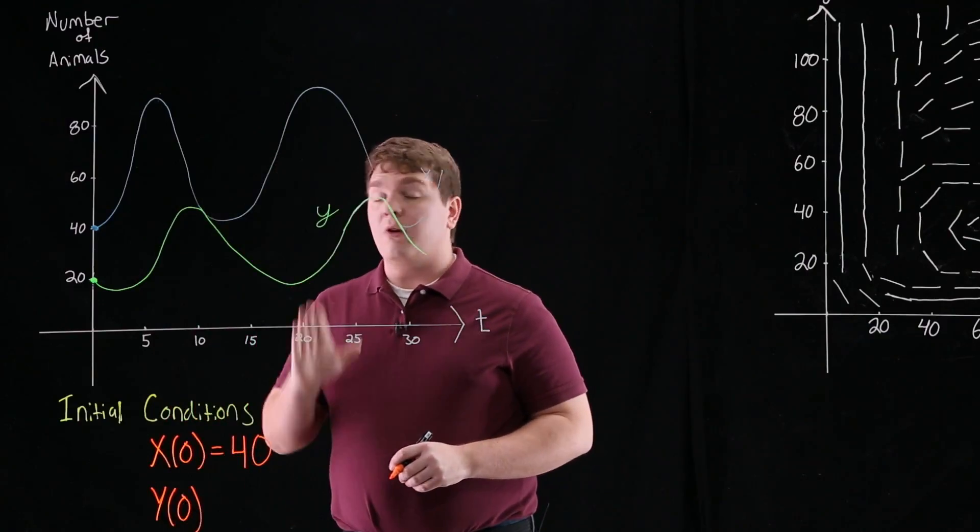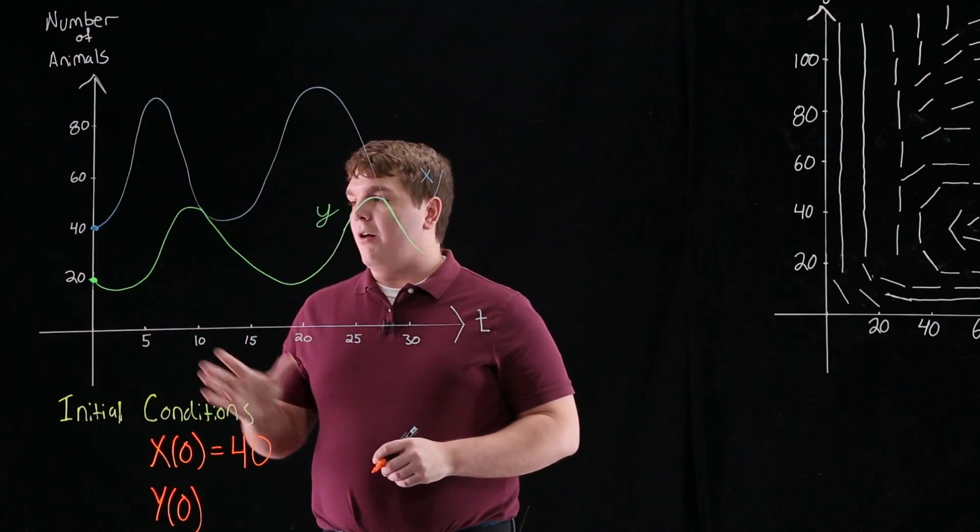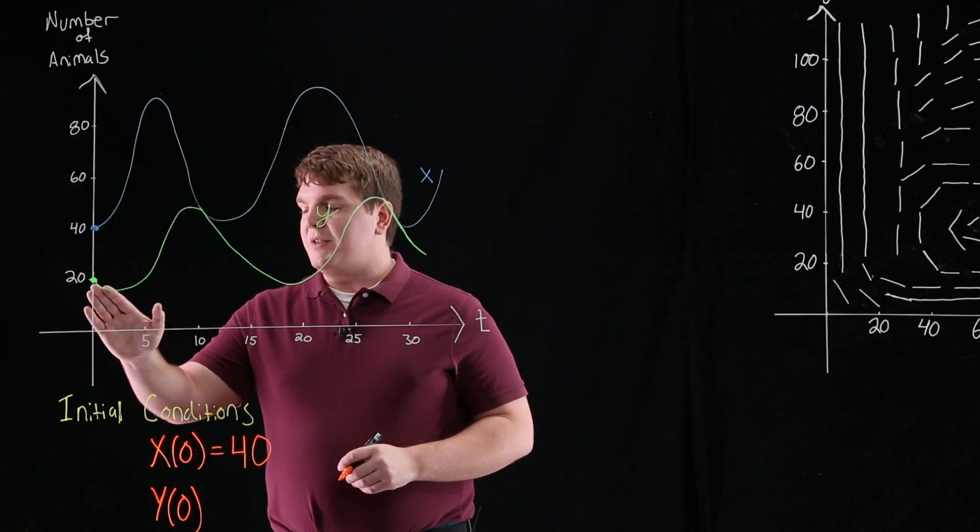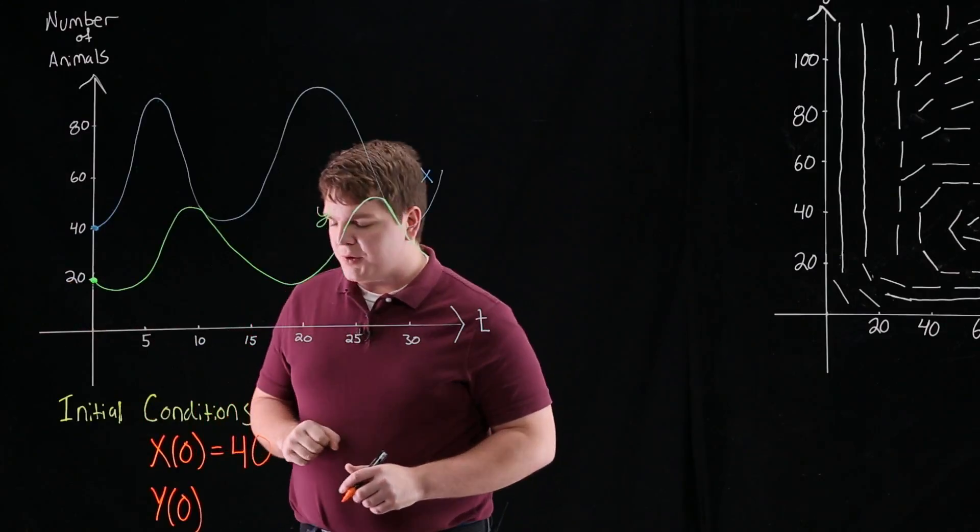Now to find y, we'll look at the graph of y and we'll follow that back to where t equals 0, and we see that when t equals 0, y equals 20.